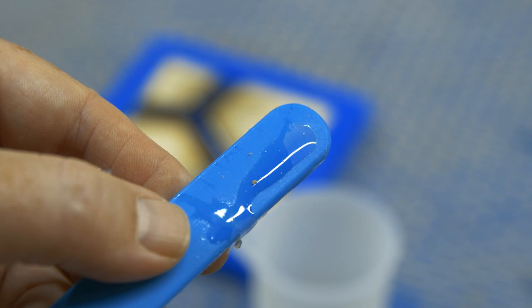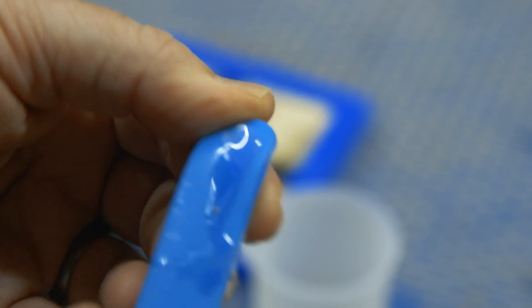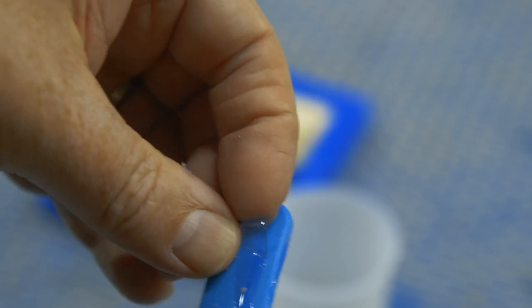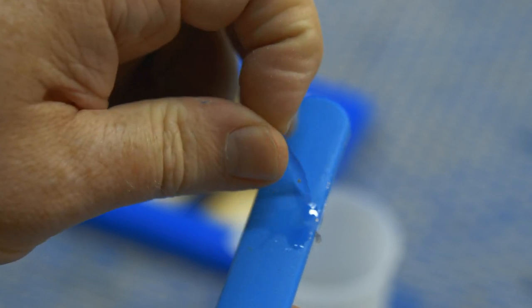Which means that you don't even need to waste a popsicle stick for mixing. Just let it cure with the rest of your project and then peel off the waste when it's hardened.